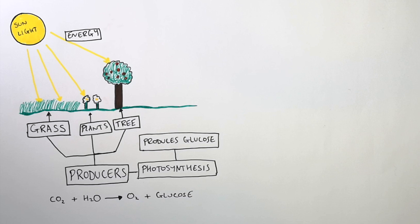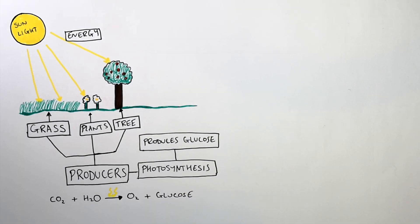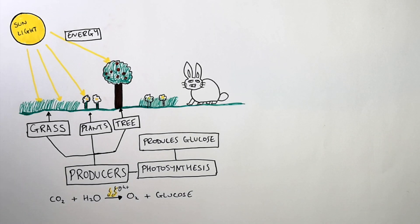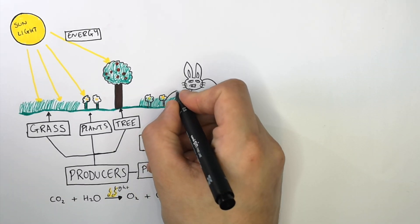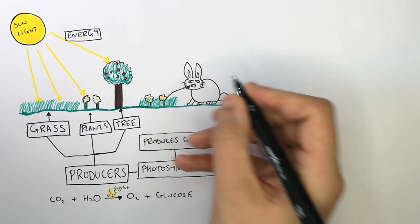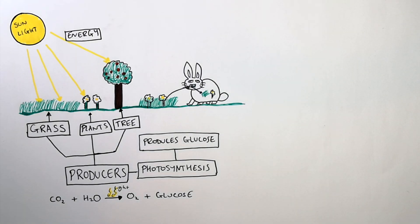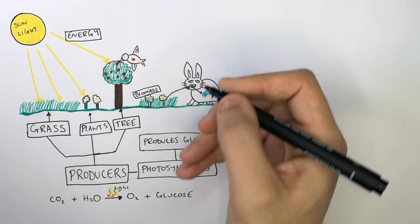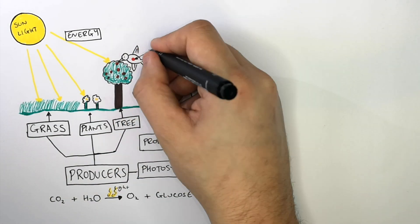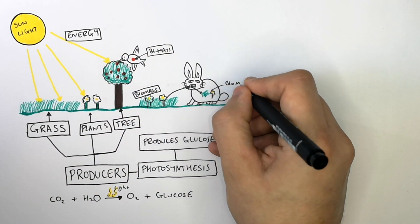And this reaction can only happen with the light energy from the sun. The next stage of a food chain is when a primary consumer will eat the producer. So energy is being transferred in the form of biomass from the grass into the rabbit and from the fruit of the trees into the birds. So energy stored in the biomass is being transferred from the producer to the primary consumer.